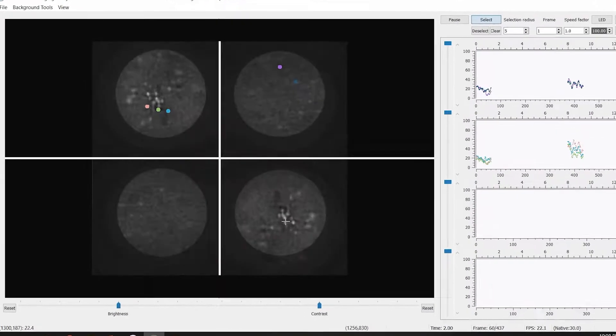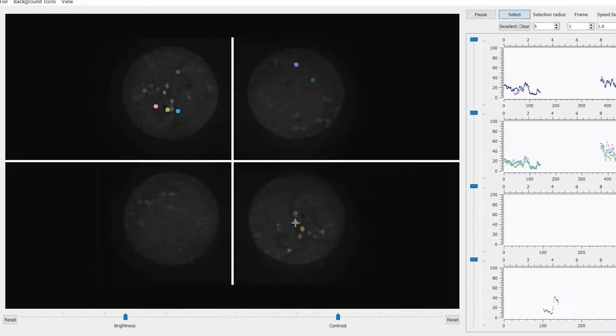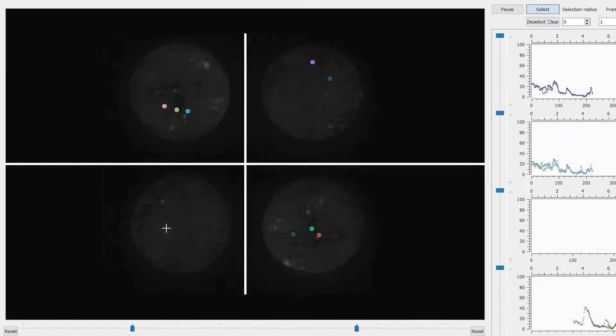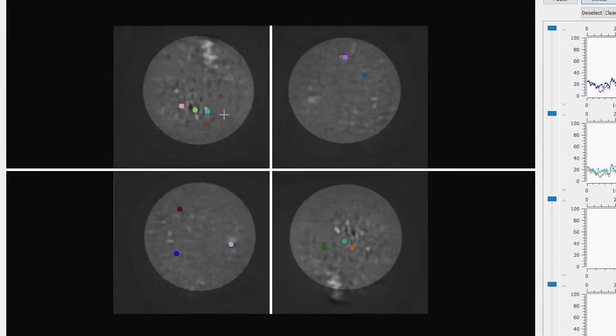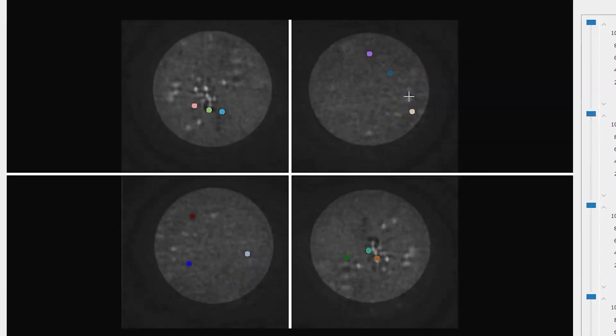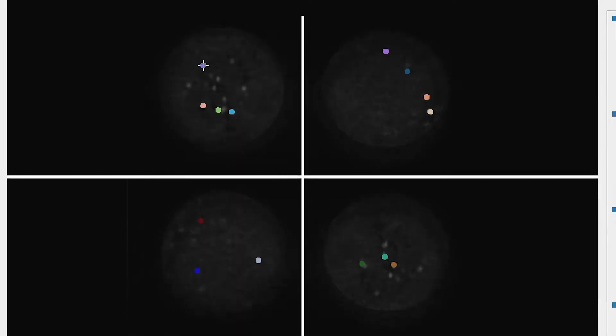When you start the imaging session, what you will have is large circles. And in each of these circles, there are smaller dots. They become brighter and they go dim, and those are individual neurons. So you literally see the activity of neurons as the mouse moves around.